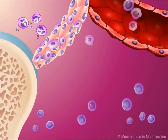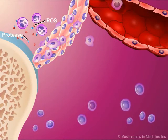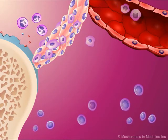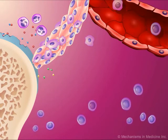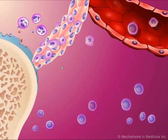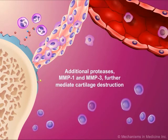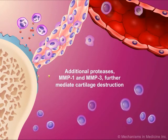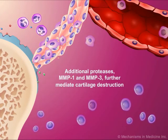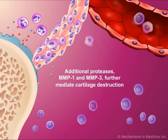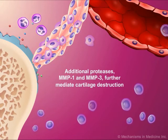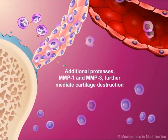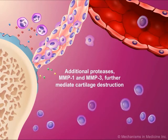The PMNs release proteases and reactive oxygen species, or ROS, destroying nearby cartilage. Fibroblast-like synoviocytes, also stimulated by TNF-alpha and IL-1, release additional proteases such as matrix metalloprotease-1, or MMP-1, and matrix metalloprotease-3, or MMP-3, further mediating cartilage destruction.